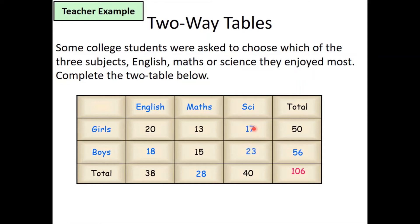And so on — filling in 17, 23, 56, and 106. We now have a complete two-way table.